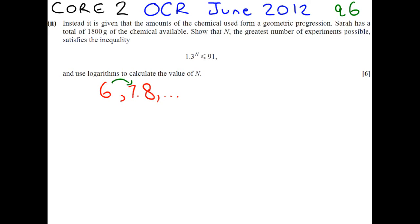If it was geometric, times it by R, the first term is still 6. R we are going to get by doing 7.8 divided by 6, which is 1.3.